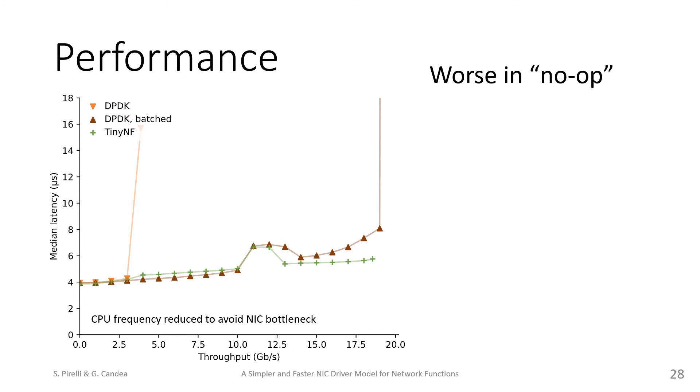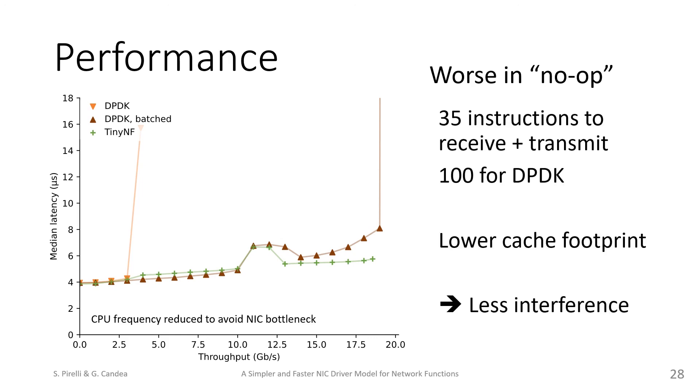To explain the performance results, we measured low-level metrics, such as the number of CPU cycles, assembly instructions, and cache hits per packet. Overall, TinyNF does so little that it can receive and transmit a packet in 35 instructions, compared to DPDK's 100.